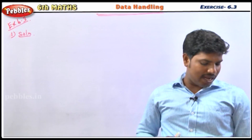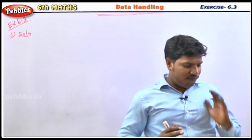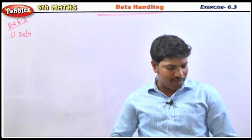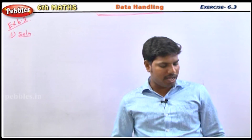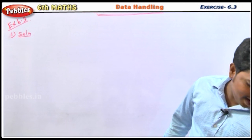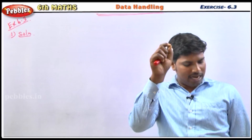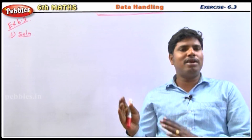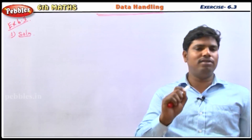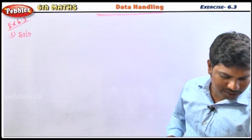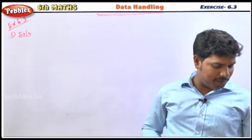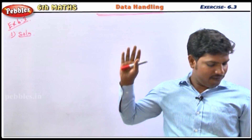There are some questions asked about the bar diagram. The first question: which day of the week was the maximum number of shirts produced? The maximum number of shirts were produced on Friday.